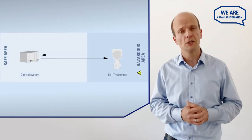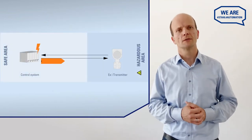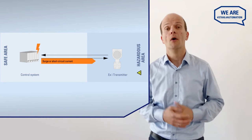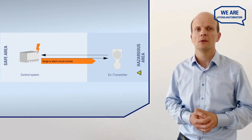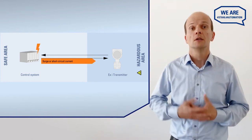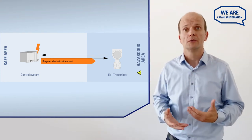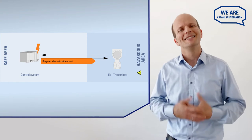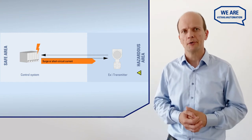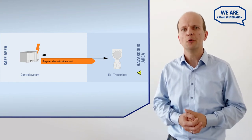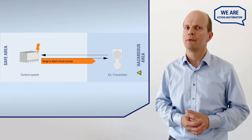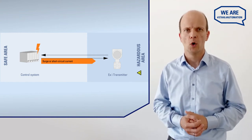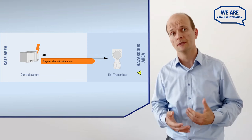But what if a short circuit causes a high current, or if a malfunction of the source creates a surge? Such scenarios need to be considered for intrinsically safe loops in zone 1 or in zone 0.